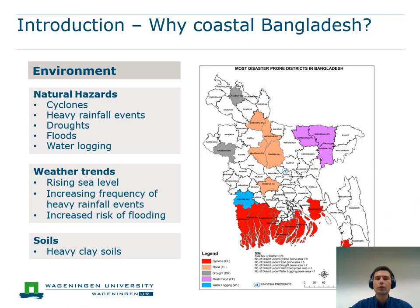On the following slide I want to give you a short introduction on why it is most important to support weather and market services specifically for Mungbean farmers in coastal Bangladesh. The map on the right-hand side shows the most disaster-prone districts of Bangladesh in red, which are all located along the coastline. Nationwide, the most relevant natural hazards are cyclones, floods, and most importantly for this study, heavy rainfall events.